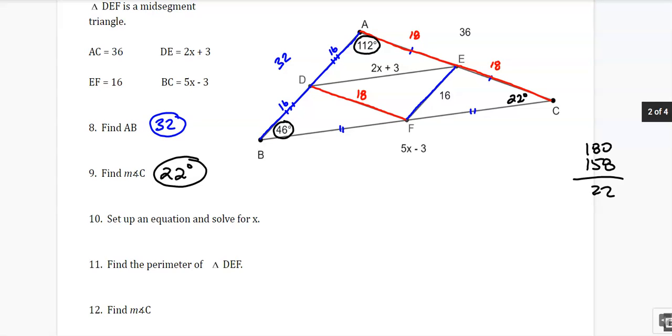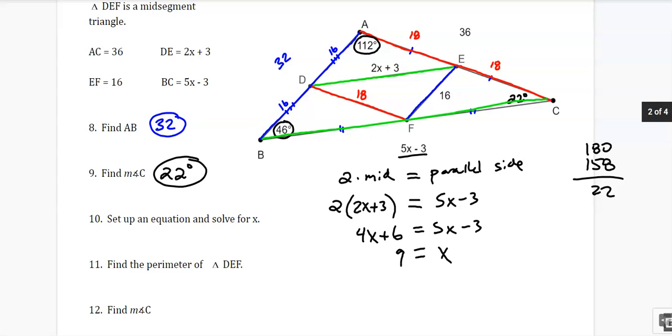Set up an equation and solve for x. We have a mid-segment and we have a full side. And we know that the mid-segment is half of the side. So a way to set this up is to go two times the mid-segment should equal his parallel side. So two mid-segments should equal this whole side here. So that gives me 4x plus 6 when I distribute. And when I minus 4x and I add 3, looks like I got x equals 9.